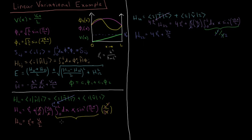These are fairly intuitive results: each is just the original particle-in-a-box energy plus half of V0. So each state got pushed up by half of the total height of the slant.